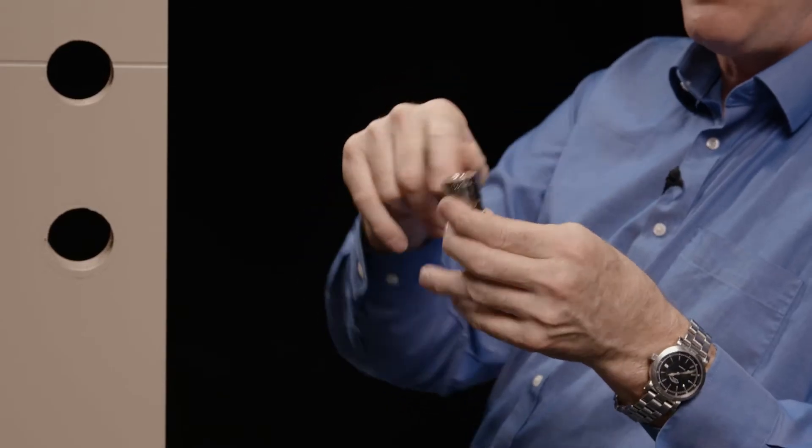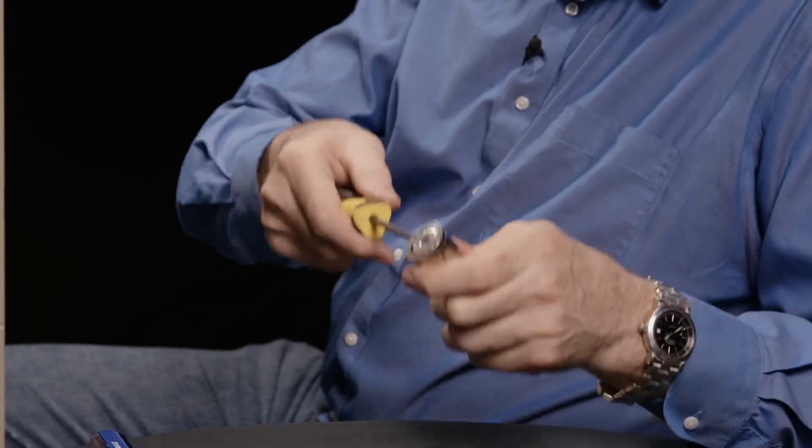This deadbolt comes pre-configured for a drive-in latch. This silver collar would operate with the drive-in latch, so we're going to remove that. Simply insert our flathead screwdriver and twist, and the parts will just fall off of the lock.